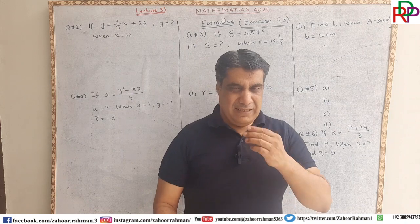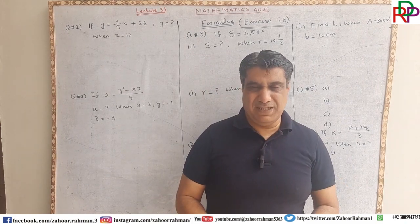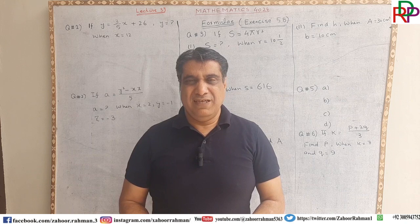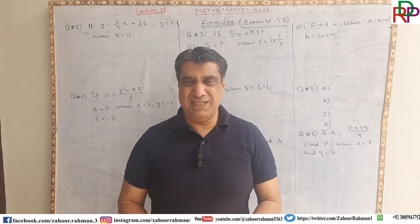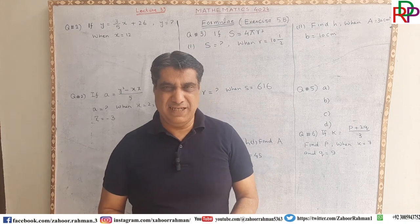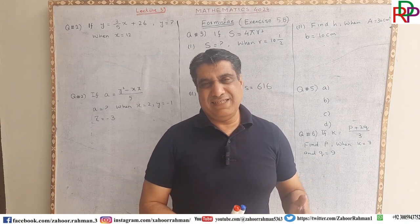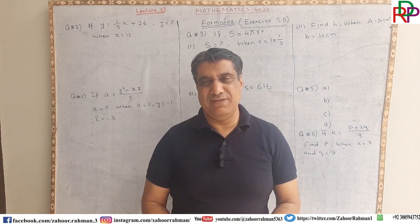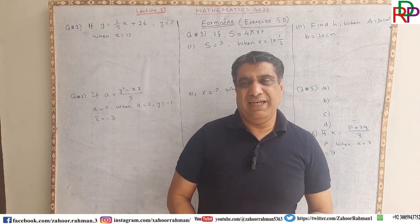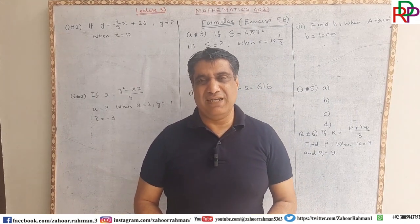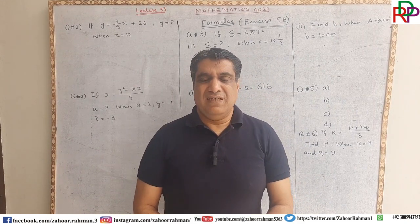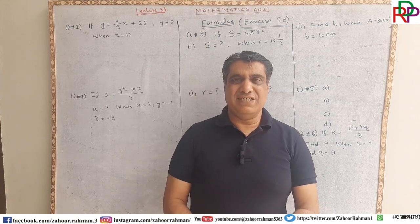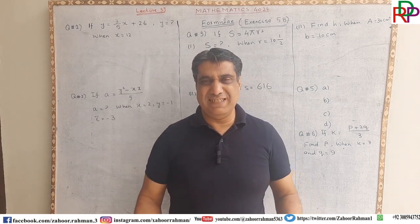We have to give values to different variables and then find the corresponding value of the subject. For example, if the area of a rectangle is L cross B, then L and B represent the variables and A is the subject. By giving different values to L and B we are able to find the area. Scientists work hard and formulate formulas for the convenience of people to be easily solved.